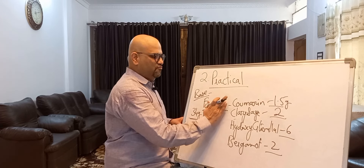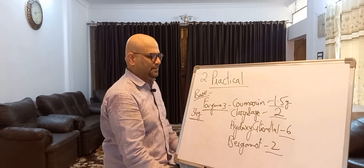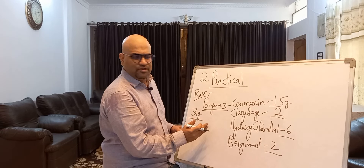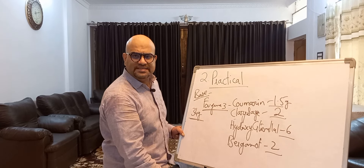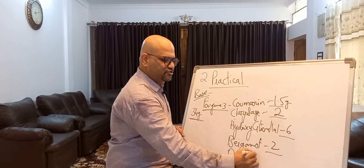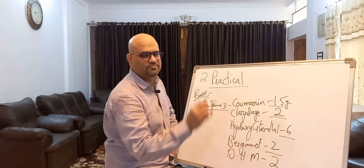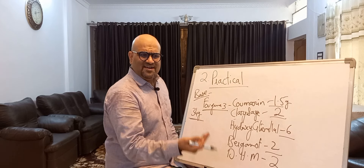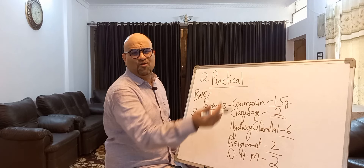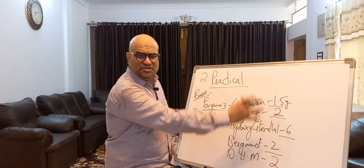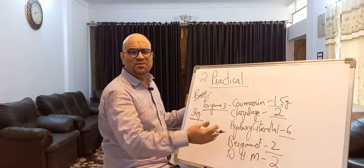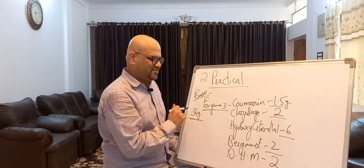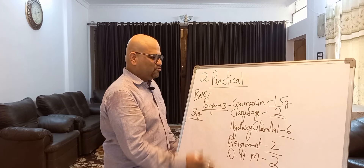Fougere 3 is simple — all we are going to do is take Fougere 2 and add just one more material: Dihydromyrcenol 2 grams. So Fougere 3 contains Coumarin 1.5 grams, Clary Sage oil 2 grams, Hydroxy Citronellal 6 grams, Bergamot oil 2 grams, and Dihydromyrcenol 2 grams, on the same 34 gram base.